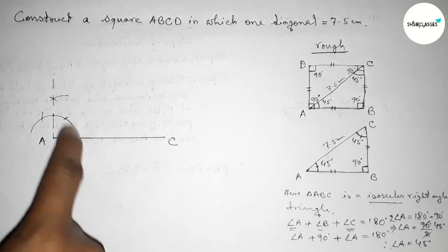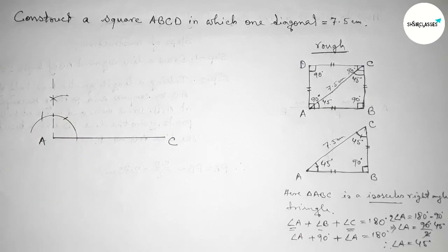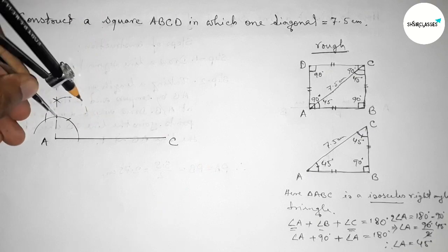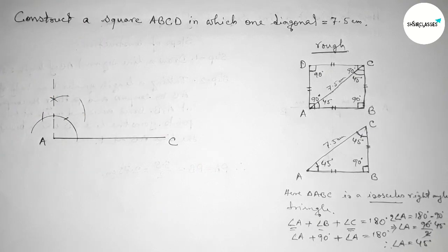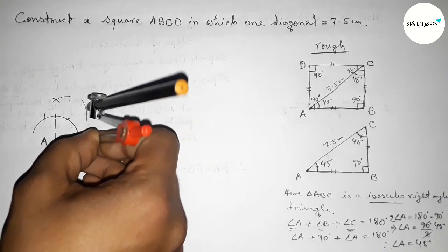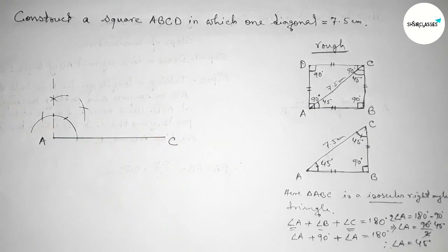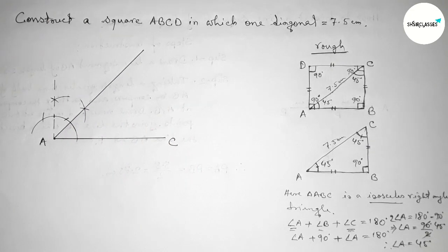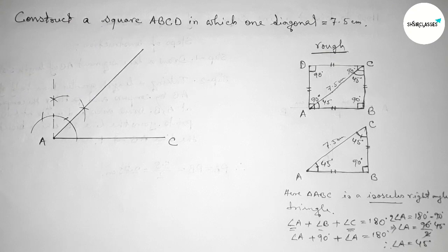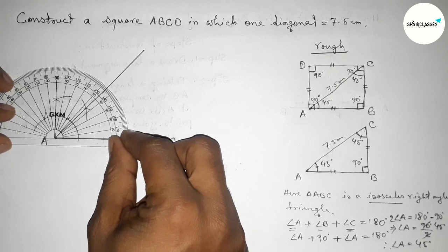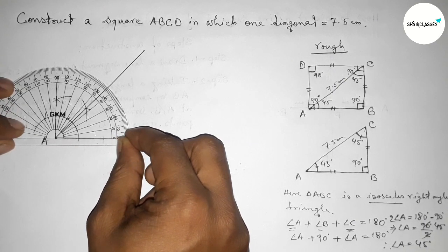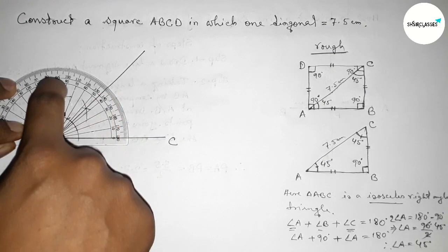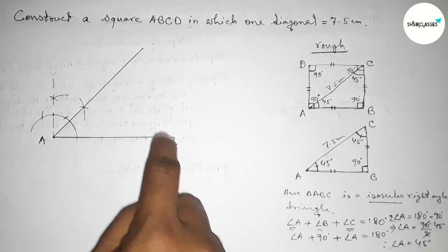Next we have to bisect this 90-degree angle to get 45 degrees. Putting the compass at the arc intersections, taking greater than half the length, and cutting arcs on both sides. Joining this line gives a 45-degree angle. Checking with a protractor — this is perfectly a 45-degree angle, and the other is 90 degrees.